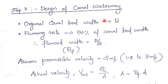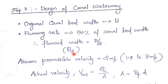Step 3: Design of canal waterway. Original canal bed width B is given. Fluming ratio is taken as 50%, so flumed width BF = B/2. Assume permissible velocity of 2 m/s (range 1.8–3 m/s). Actual velocity V = QC/A, where A = BF × D (flumed width × water depth). Check that actual velocity < permissible velocity and that Froude number < 1 (subcritical flow).